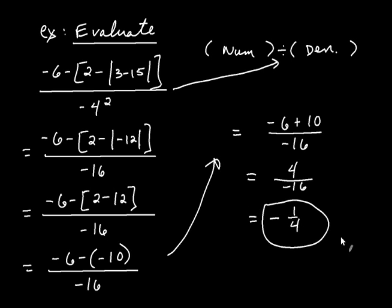This was a good example using many different types of operations. You have to be really careful about the order, and the secret is simply writing everything from left to right, taking things one step at a time.